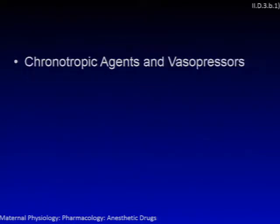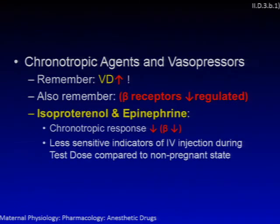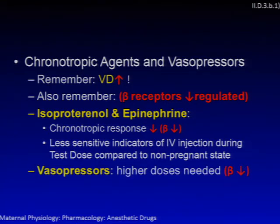For chronotropic agents and vasopressors, volume of distribution is increased and beta receptors are down-regulated. For drugs like isoproterenol and epinephrine, this means decreased chronotropic responses, making them less sensitive indicators of intravascular injection during a test dose compared to the non-pregnant state. Vasopressor dosing is also changed due to beta-receptor down-regulation — you need higher doses of vasopressors in pregnancy to achieve the same effect.